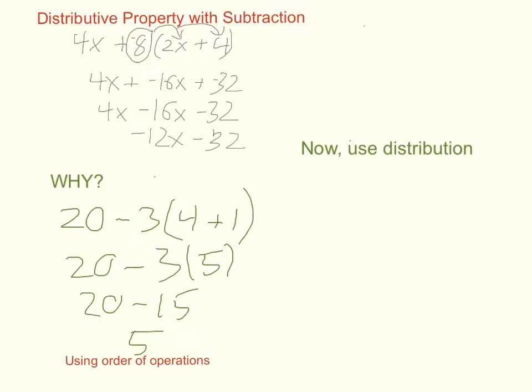That's what we got using order of operations, and it should work the same if we do it with the distributive property as we did in the previous example. So let's take 20 minus 3 and 4 plus 1. Now according to my rule, I have to take the negative with the 3 and distribute to both of those.